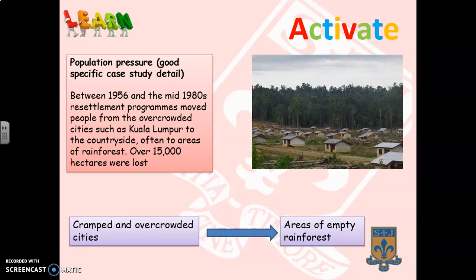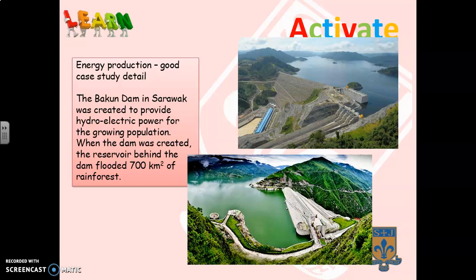Another cause of deforestation in Malaysia is population pressure. Between 1956 and the mid-1980s there was a resettlement programme that moved people from overcrowded cities like Kuala Lumpur into the countryside. The government thought: we have millions of people in the cities and empty rainforest — why not move people there? This meant parts of the rainforest had to be cleared, and over 15,000 hectares of tropical rainforest were lost.